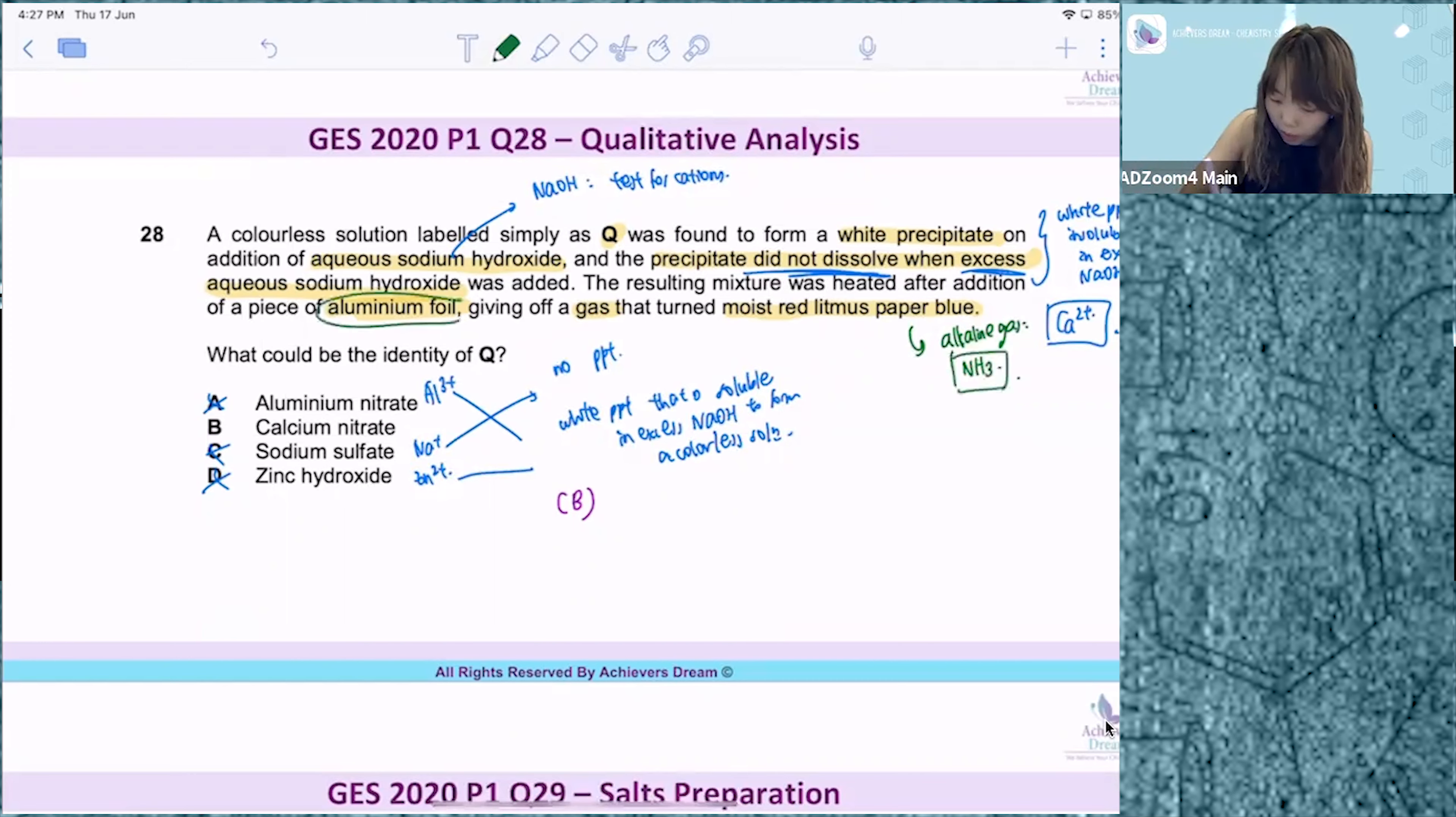And also, whenever you see aluminium under QA, link it to the test for nitrate.